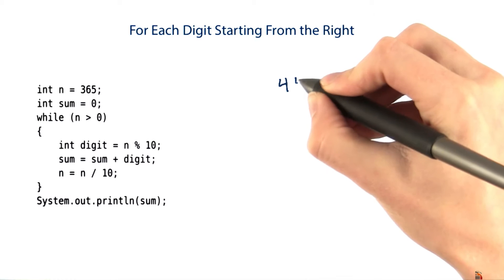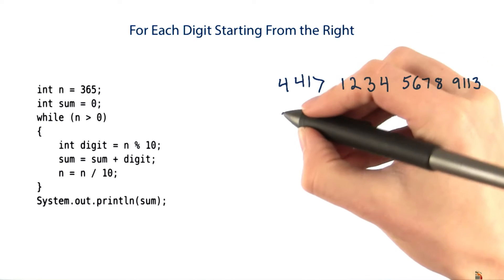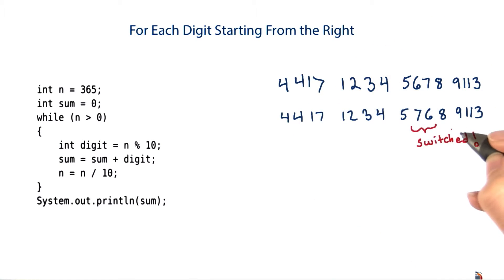And here's why. When you write down a credit card number, it's really easy to switch two numbers. And that's pretty annoying for somebody who's trying to charge your credit card so you can buy things.